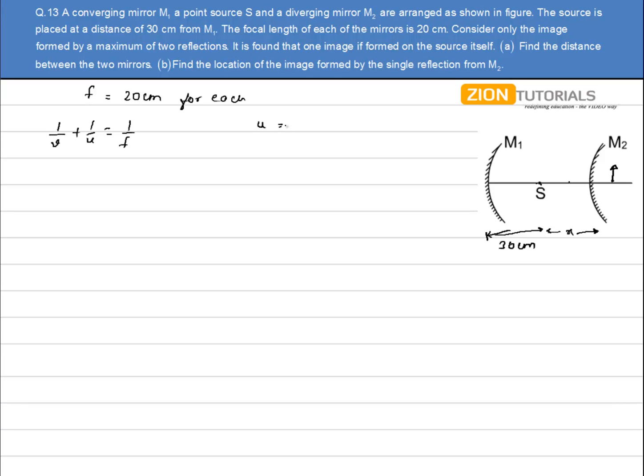Right. Object is minus 30 cm. Focal length is minus 20 cm. So 1 by v minus 1 by 30 equals minus 1 by 20. So v comes out to be minus 60 cm. So this distance comes out to be 60 cm.